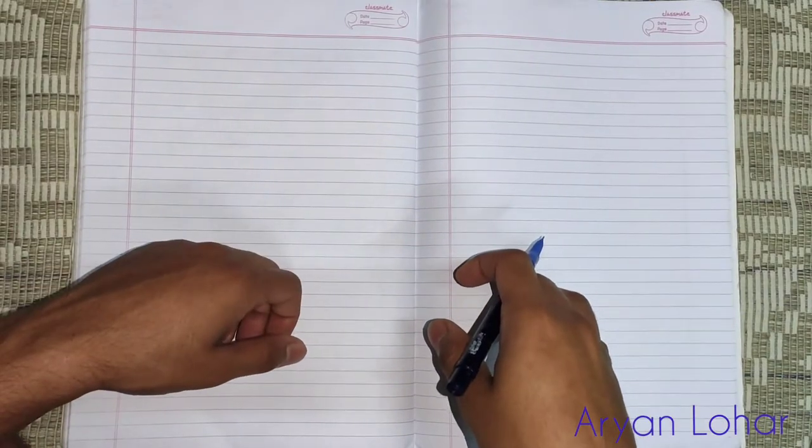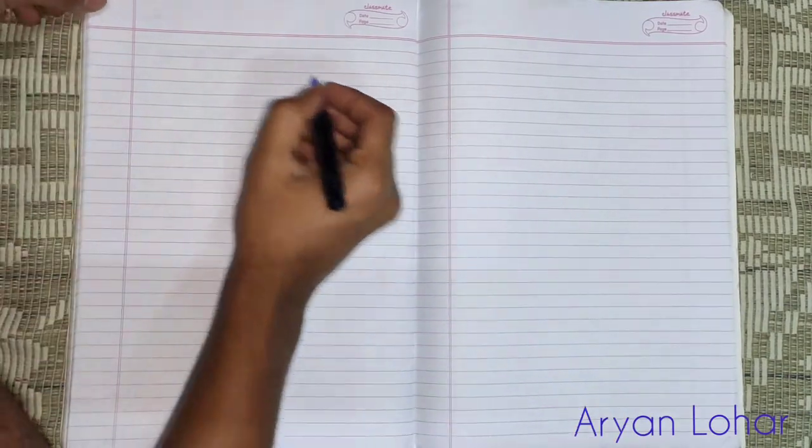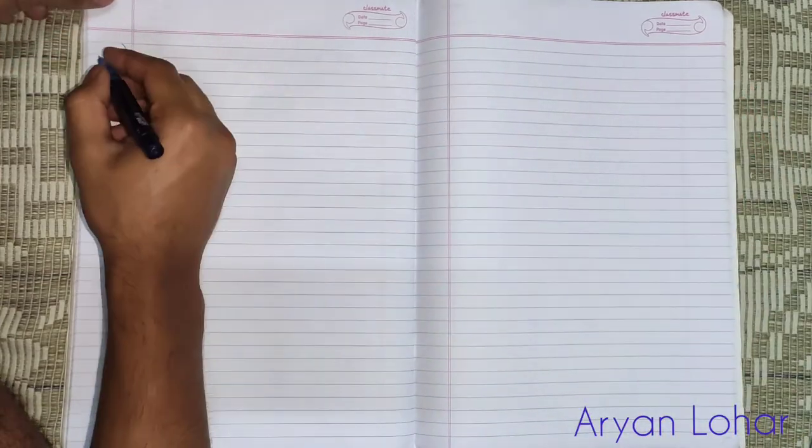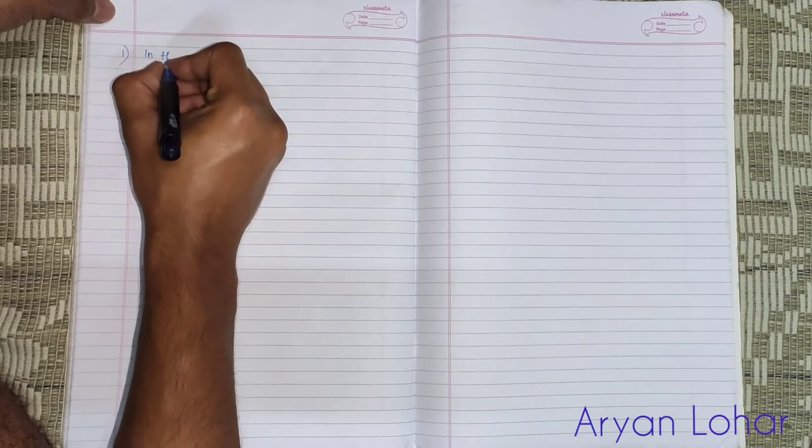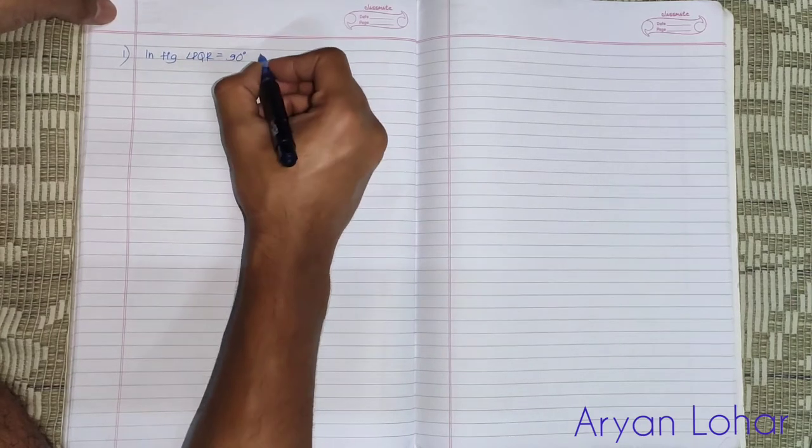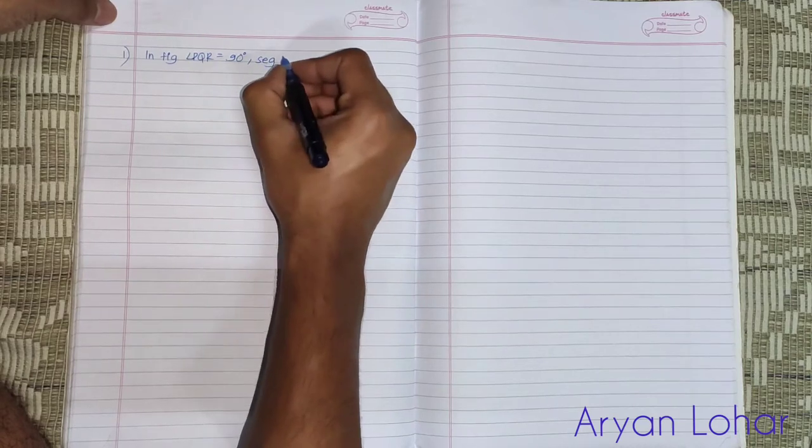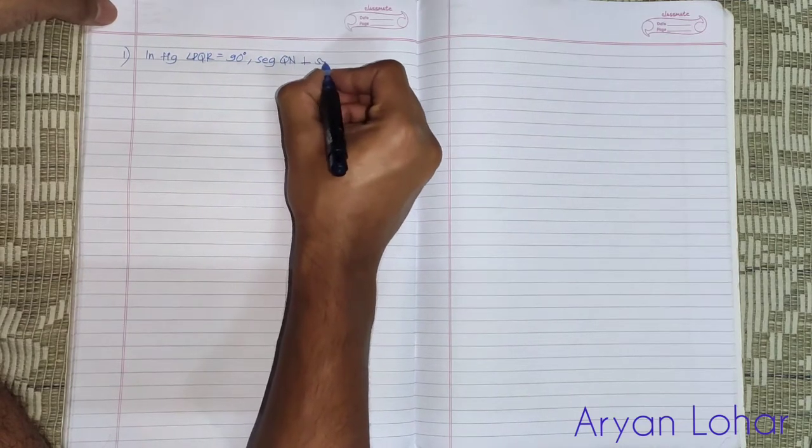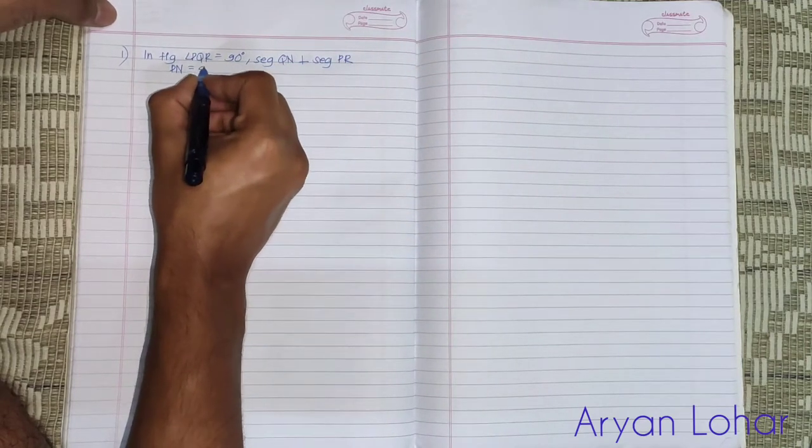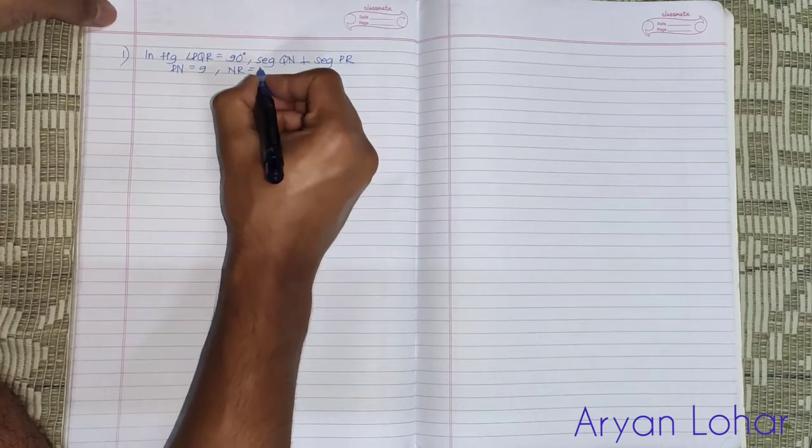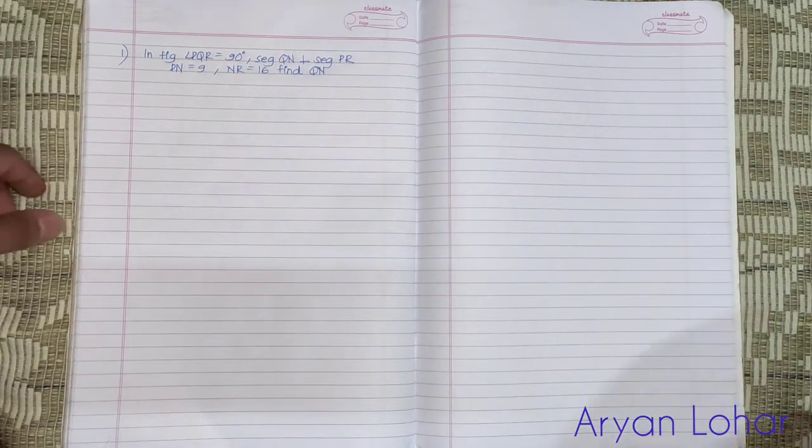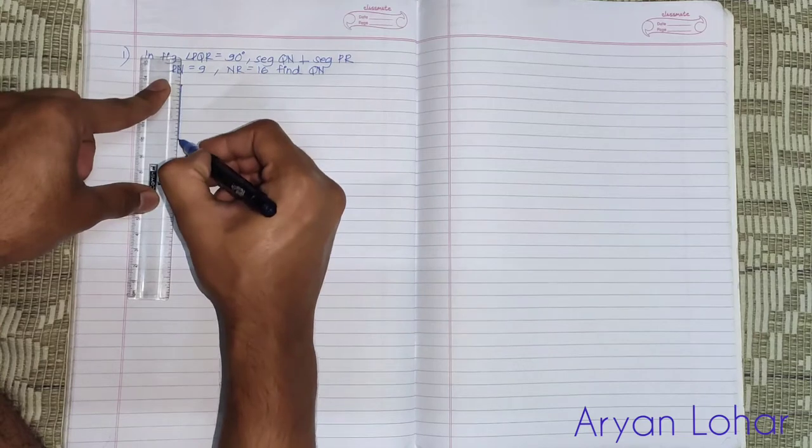Hey hello friends, coming back to a new video. Today we will take an example on the previous theorem, that is the theorem of geometric mean. Let's start. First example: In the figure, angle PQR is equals to 90 degrees, segment QN perpendicular to segment PR, PN is equals to 9, NR is equals to 16. We have to find QN.